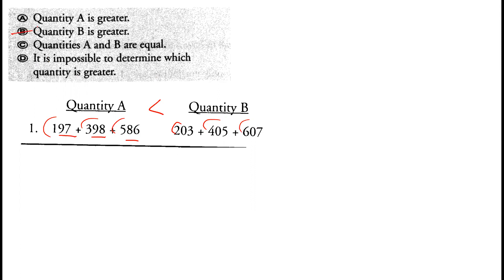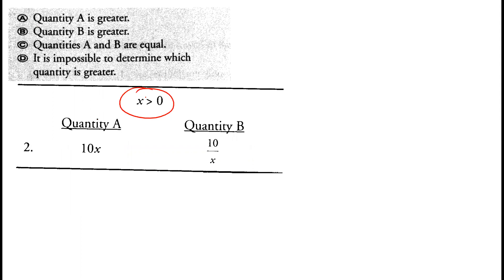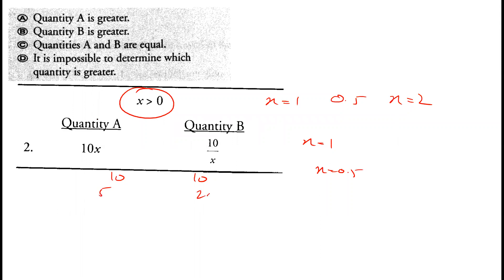X is greater than zero — x can be 1, 0.5, or 2, so there are many possibilities. Quantity A is 10x and quantity B is 10 over x. If x is 1, both equal 10. But if x is 0.5, quantity A is 5 and quantity B is 20. Since we can't determine which is greater, option D is correct.